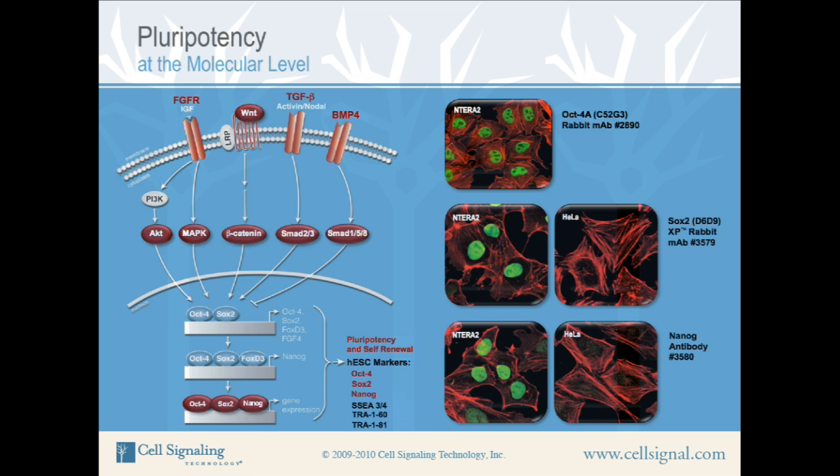OCT4, SOX2, and NANOG antibodies have been labeled green. Actin filaments have been labeled red with DY554 phalloidin. NTERA2 is a human embryonic carcinoma cell line that expresses the same markers as ESCs.